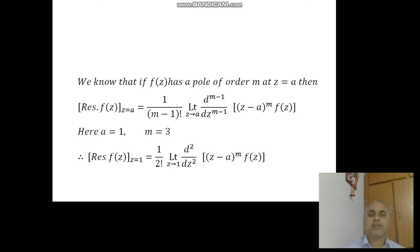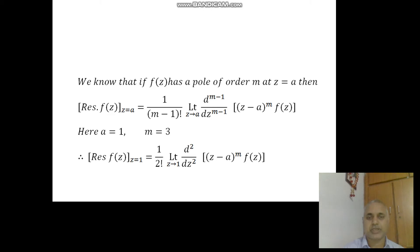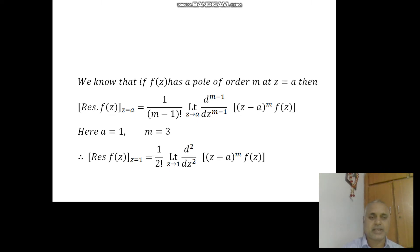We know that if f of Z has a pole of order M at Z = A, the residue of f of Z at Z = A is equal to 1 by (M minus 1) factorial, into the (M minus 1)th derivative of (Z minus A)^M into f of Z, evaluated as Z tends to A. Here A = 1 and M = 3.